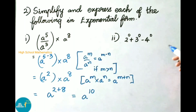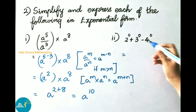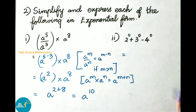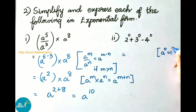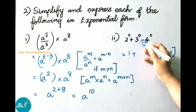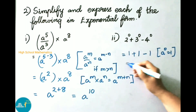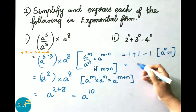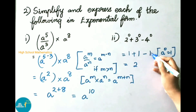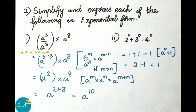Second sum: 2 power 0 plus 3 power 0 minus 4 power 0. Using the formula a power 0 equals 1, we get 2 power 0 equals 1, 3 power 0 equals 1, and 4 power 0 equals 1. So 1 plus 1 minus 1 equals 1. The answer is 1.